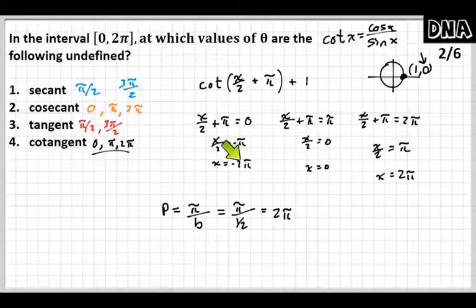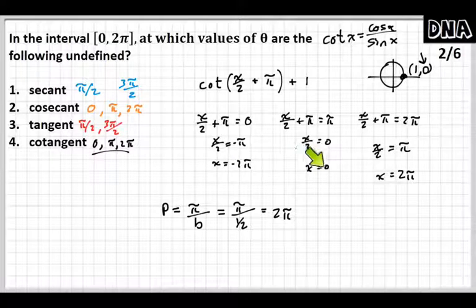So if I started at this asymptote and I added 2π, I would get 0. If I added 2π, I would get 2π. If I added 2π, I would get 4π. And those would be all the asymptotes.